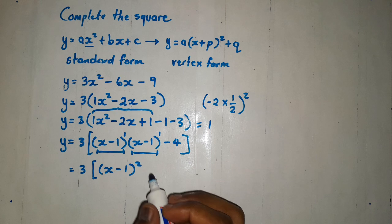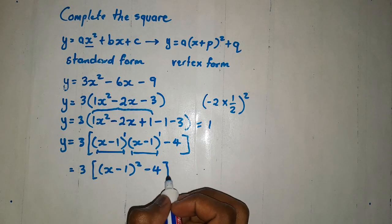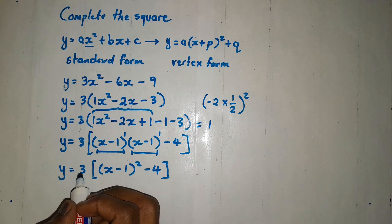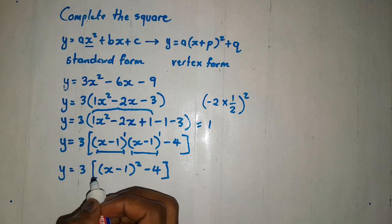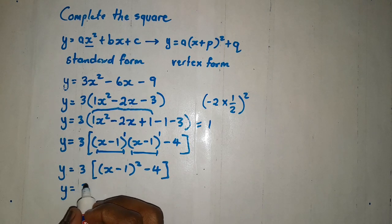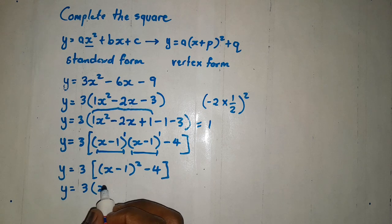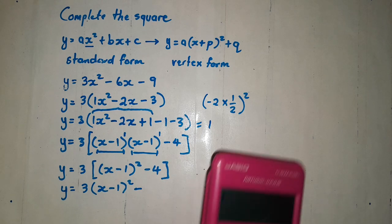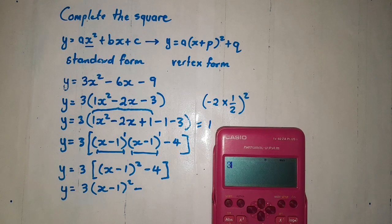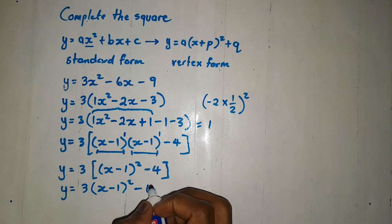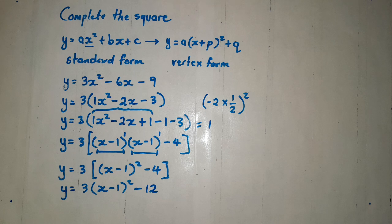This is what we are going to get. Then, we have x minus 1 squared minus 4, close. Then, factor, sorry, and multiply throughout by 3. Then, we are going to get 3 times x minus 1 close, squared, minus. Let's check. 3 times 4, we must get 12. Then, we are going to write 12. Just like this.